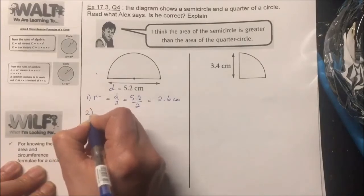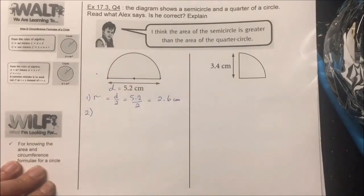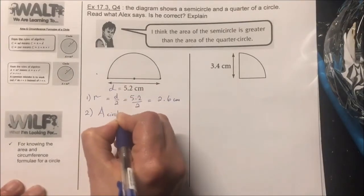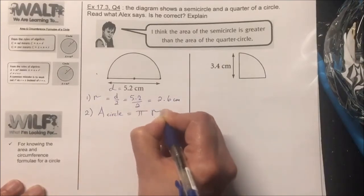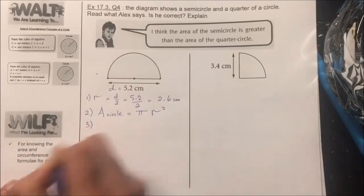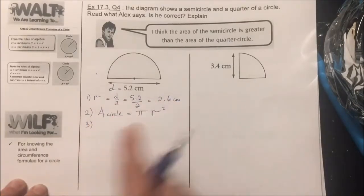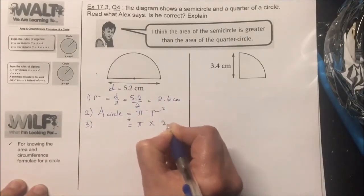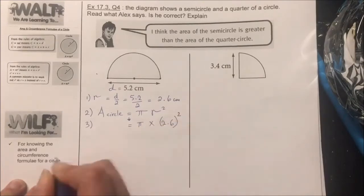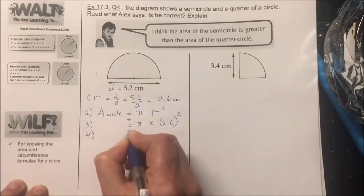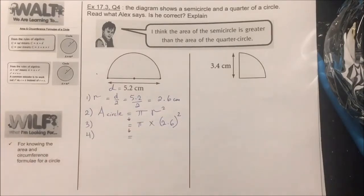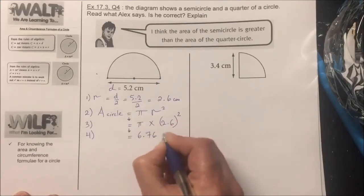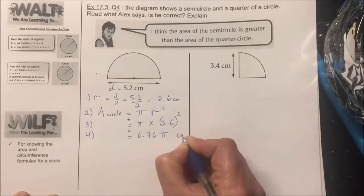In step two, we write the general formula for the area of a full circle: Area = πr². In step three, we substitute the value of r, so it's π times 2.6 squared. In step four, we calculate and leave the answer in terms of pi, which gives us 6.76π cm².